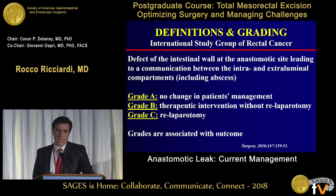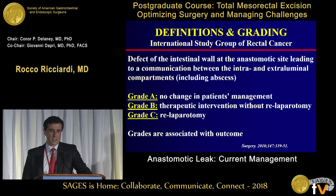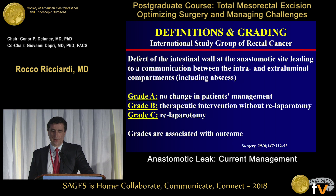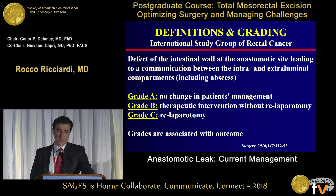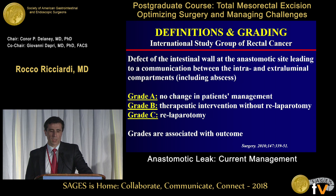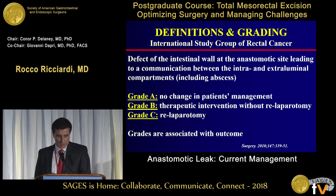This leads us to a consensus definition and grading for anastomotic leak provided by the International Study Group of Rectal Cancer. The definition is a defect of the intestinal wall at the anastomotic site leading to communication between intra- and extraluminal compartments. They also provided a grading system: Grade A — no change in management; Grade B — therapeutic intervention needed but no laparotomy; Grade C — patient required laparotomy. When tested across a cohort of patients, these grades were found to be associated with outcomes, validating the grading system.